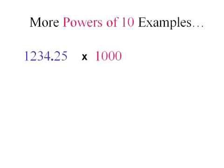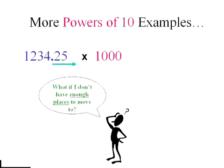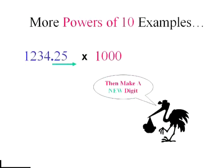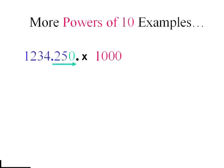For instance, in this example, I have three zeros. So I would need to move the decimal place over three places. But I don't have three places. I can make a third place. How do you make a third digit? Add a zero. Not a problem. And there's my answer.